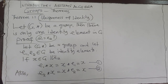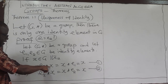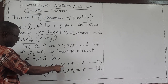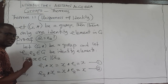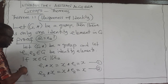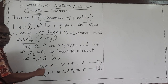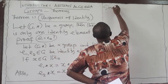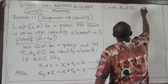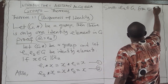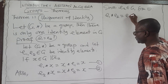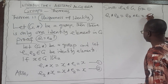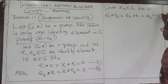From equation 1, if I take any X and operate it with E1, I get X back. E2 is an element in G, so we can replace X with E2. Since E2 is an element in G, from equation 1 we can write E1★E2 = E2★E1 = E2. Call this equation 3.